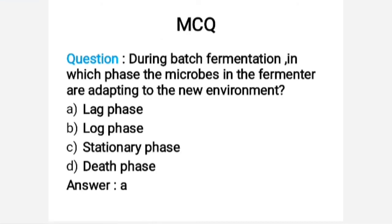MCQ: During batch fermentation, in which phase are the microbes in the fermenter adapting to the new environment? In the lag phase, microbes adapt themselves to the environment — this is the phase where microorganisms prepare themselves and produce the necessary enzymes and metabolites required for growth. In log phase, microbes grow exponentially; in stationary phase, death rate and growth rate become equalized; and in death phase, cells lose viability. So the correct answer is option A: lag phase.